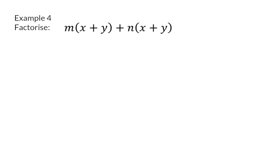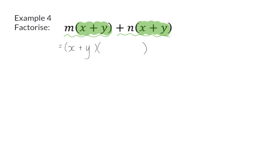In example 4, it is important to see that the instruction says factorize and not simplify, because with simplification you would have multiplied m and n into the brackets. Here we now have two terms which we need to factorize, so we need to determine what the common factor is — what can both terms be divided by? In this case, the common factor is the whole bracket x plus y, because both terms have the bracket x plus y as a factor. We then determine what to multiply x plus y by to get back to our original two terms. The first term was m times (x plus y), and dividing by (x plus y) leaves only m. Similarly, the second term leaves only n.